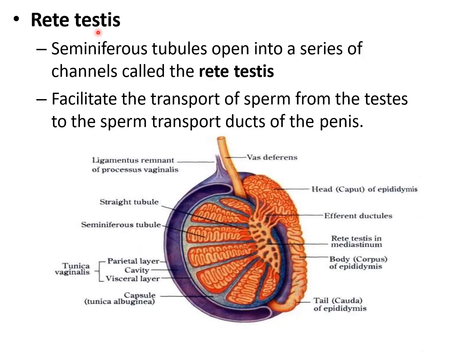About the rete testis: the seminiferous tubules open into a series of channels called the rete testis. Within the mediastinum of the testicle, you can see a series of channels — those channels are called the rete testis. It facilitates the transport of sperm from the testis to the ducts of the penis.